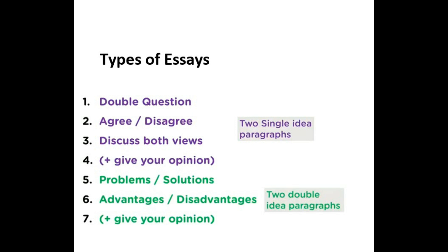At number 6, advantages and disadvantages: here we write two advantages in body paragraph 1 and two disadvantages in body paragraph 2, or vice versa. You can also find an advantages and disadvantages essay that asks for your opinion as well — in that case we can opt to add one more paragraph making it a five paragraph essay, or we can mention our opinion in the conclusion paragraph, giving us four paragraphs. We will discuss this in detail, and in this series we are going to cover essays in great numbers.